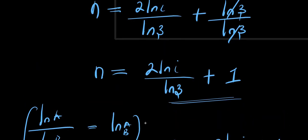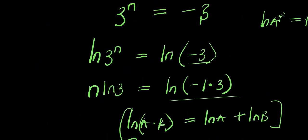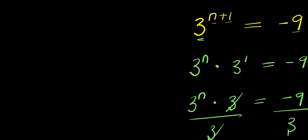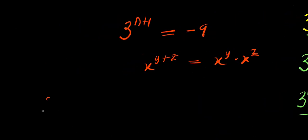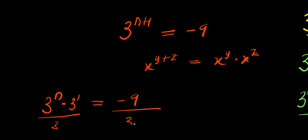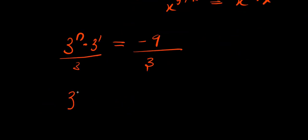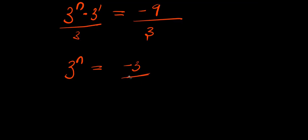Let's also solve this using a different identity for negative 1. Starting again: 3 to the power of n plus 1 equals negative 9. Applying the exponent rule, 3 to the power of n times 3 to the power of 1 equals negative 9. Dividing both sides by 3 gives 3 to the power of n equals negative 3, and we express negative 3 as negative 1 times 3.